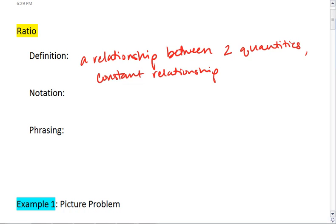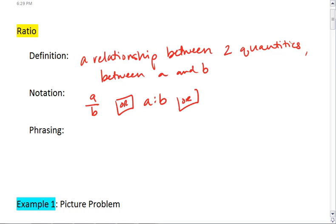The notation that we see is, for example, if we're looking at the relationship between A and B. The notation will either be A over B, or we can write it with a colon as A to B, or we can write out A to B. These are the three ways that you'll see ratios written.